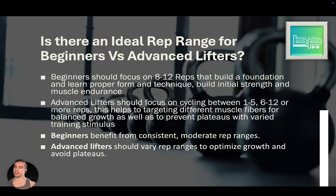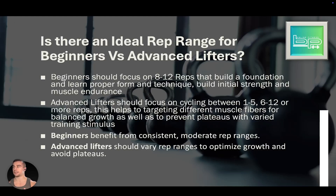Advanced lifters should focus on cycling between 1-to-5 and 6-to-12 or more reps. This targets different muscle fibers for balanced growth and prevents plateaus through varied training stimulus. As I do with my clients, varying the rep range prevents adaptation and ensures both slow twitch and fast twitch muscle fibers are being activated across different rep ranges.